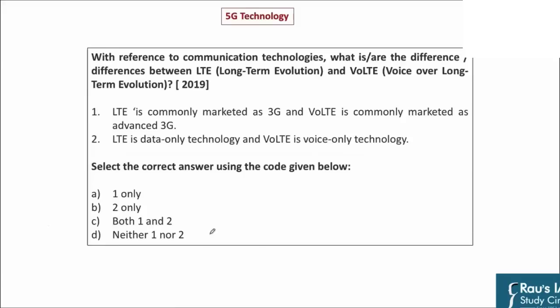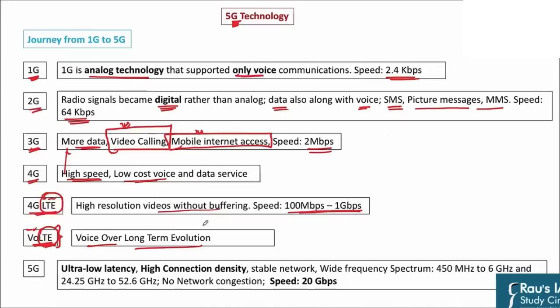UPSC in 2019 asked a question: with reference to communication technologies, what is the difference between LTE and VoLTE? The options stated that LTE is commonly marketed as 3G — but we know LTE was part of 4G. Another option said LTE is a data-only service — that is true to an extent. Another option said VoLTE is a voice-only service — which is not true. VoLTE means voice over LTE, meaning you can use both voice and LTE data simultaneously. Another option said LTE is a data-only service — which is again false, since LTE supports both voice and data. Both these statements were wrong. The answer is that VoLTE allows simultaneous voice and data, and LTE is not data-only.